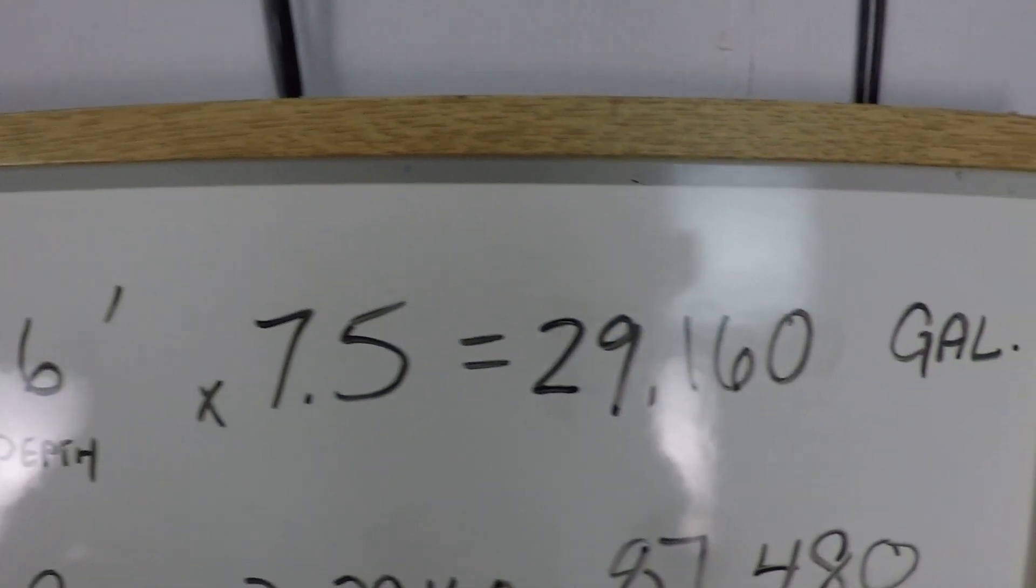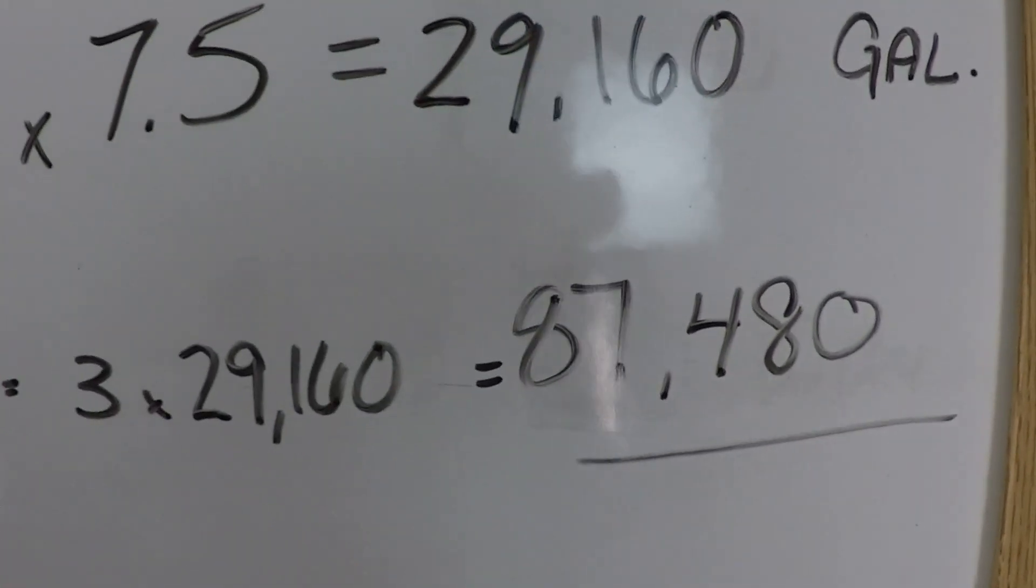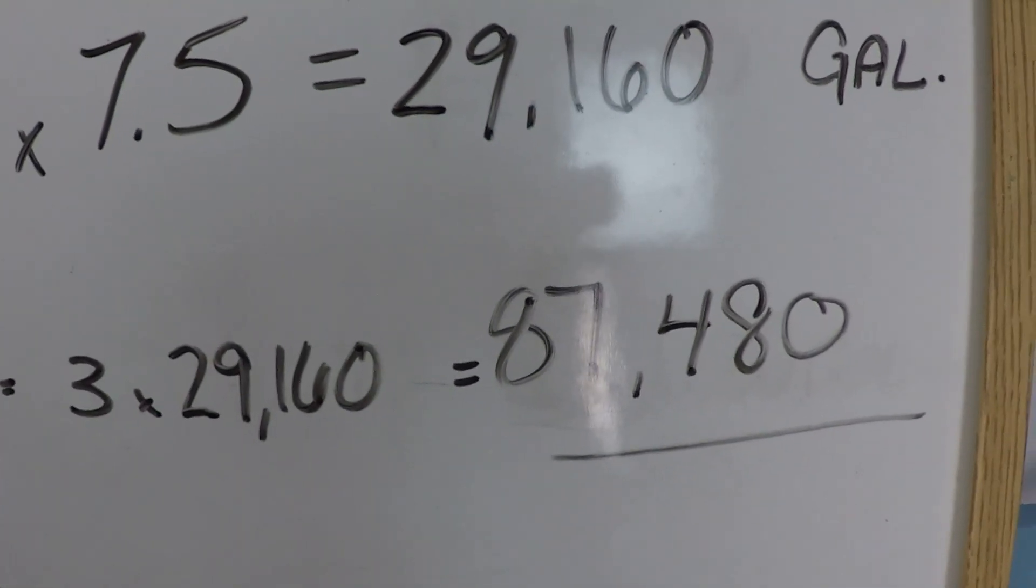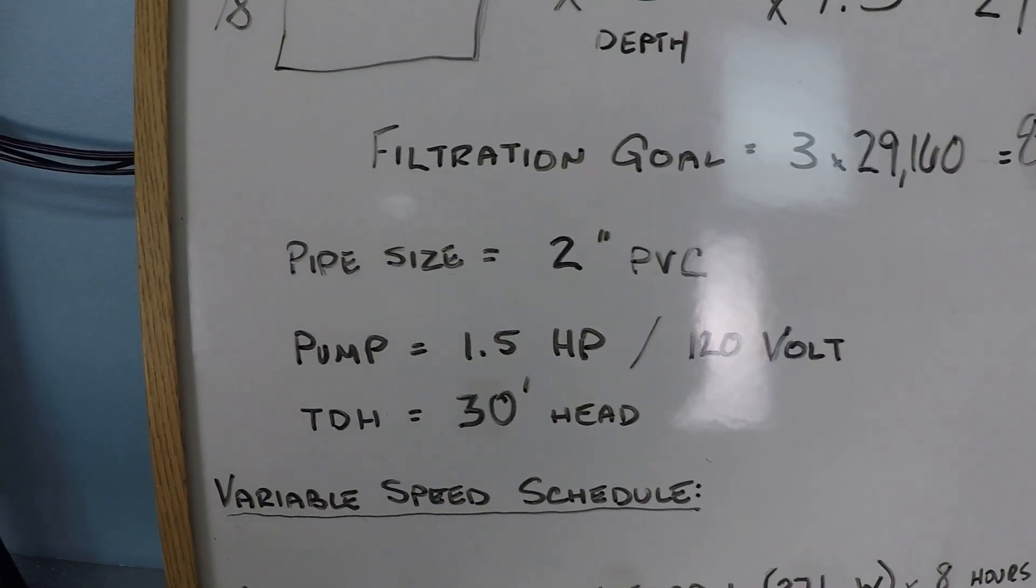With a swimming pool that's almost 30,000 gallons, when you go by the book and filter the entire volume three times every day, that's 87,480 gallons that we need to filter every day.